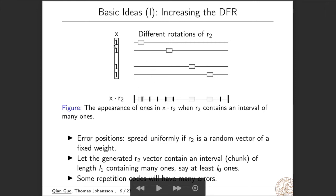Now let's look at this figure. X is a vector of small weight. Then we look at the contribution of x times r2 in the error part. In the error analysis, if r2 is a random vector of fixed weight, then we see that the errors will spread uniformly. However, now we assume that the generated r2 vector contains an interval here or chunk of length L1 containing many ones. Then we see that some repetition codes such as here will have many errors. So this repetition decoding will be erroneous with very high probability. Then the overall DFR could be large.